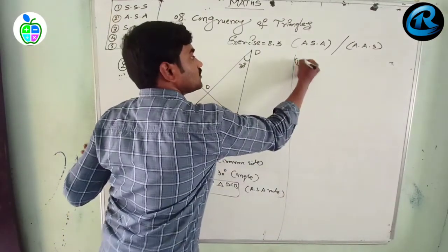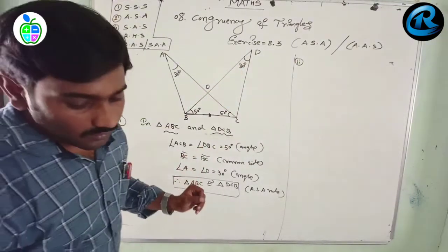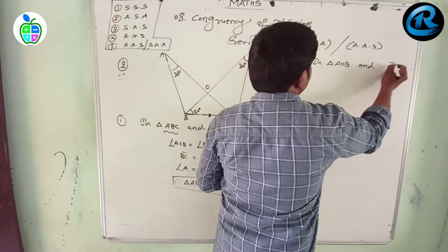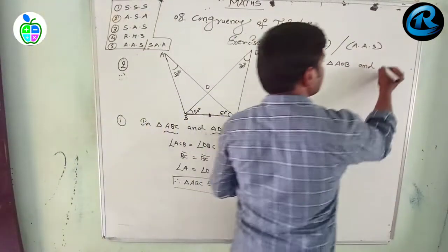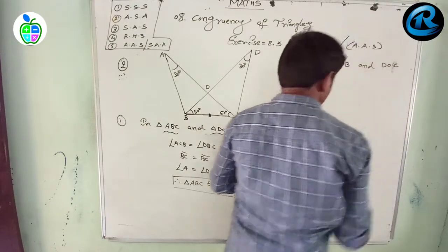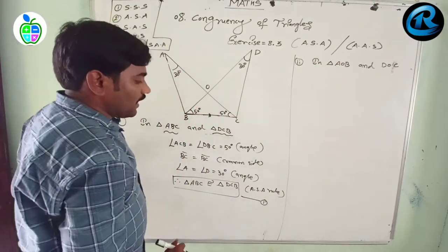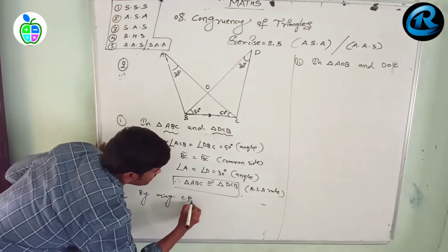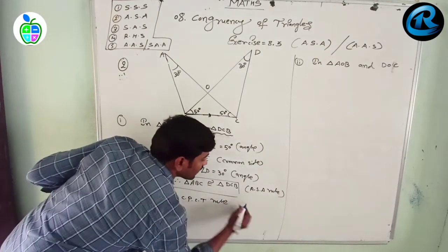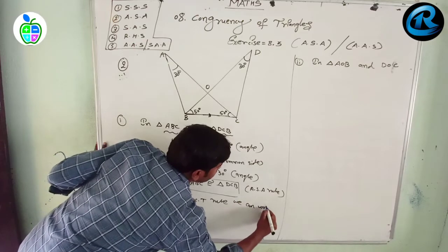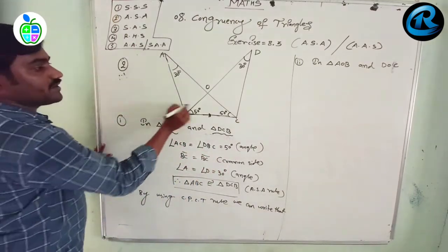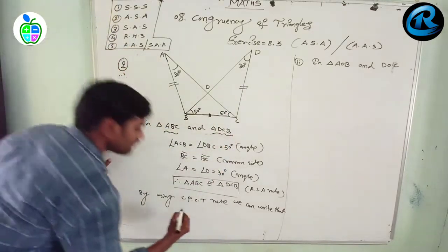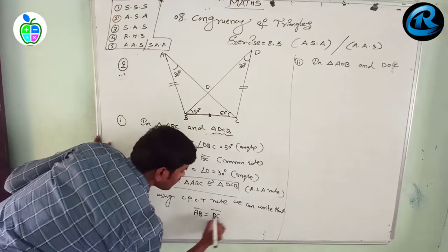Now there is a second part within this question. By using the CPCT rule — corresponding parts of congruent triangles — since triangle ABC is congruent to triangle DCB, we can write AB equals DC.